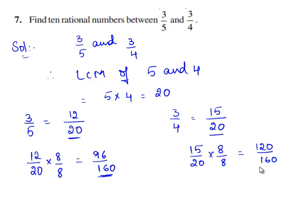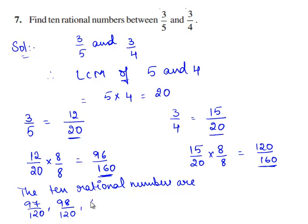Now let us write 10 rational numbers between 96 by 160 and 120 by 160. That is the 10 rational numbers are 97 by 120, 98 by 120, 99 by 120, 100 by 120, 101 by 120, 102 by 120, 103 by 120.